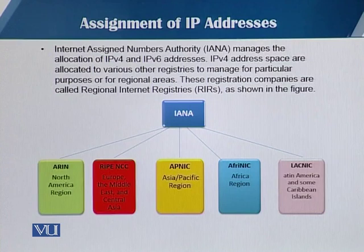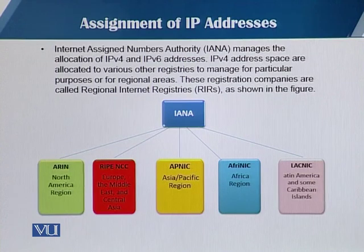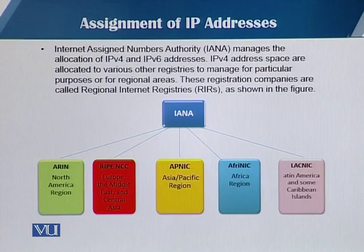As you can see on the left-most side of the slide, the first one is ARIN, which covers the North America region. Then we have RIPE, which covers Europe, the Middle East, and Central Asia. And then we have APNIC for the Asia and Pacific region, AFRINIC which covers the African region, and LACNIC which covers Latin America and some Caribbean islands.